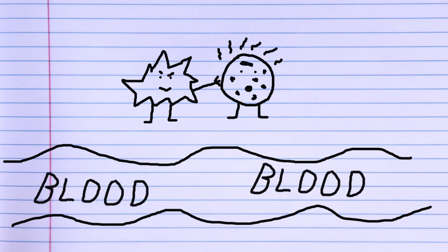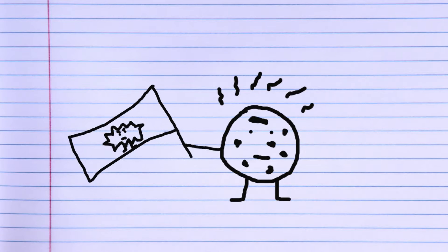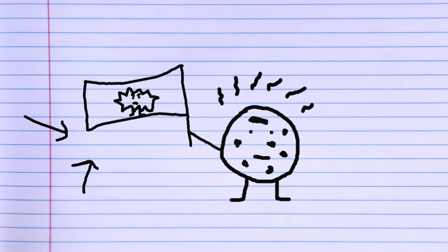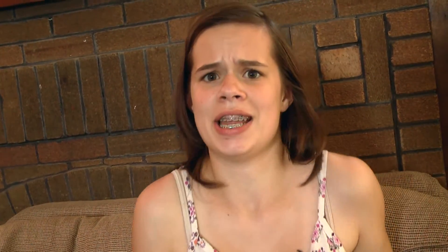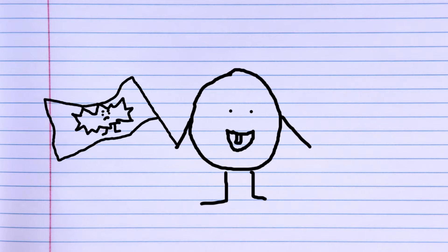Once the virus infects a cell, the cell displays the virus's antigens. An antigen is something that tells the immune system what a virus looks like. Then a type of white blood cell called the macrophage comes and engulfs the virus and also displays the antigens — essentially putting out a warning to be on the lookout.